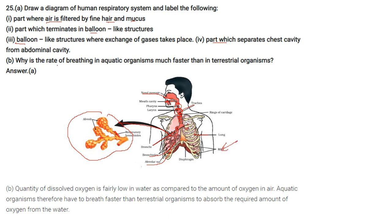Why is the rate of breathing in aquatic organisms much faster than in terrestrial organisms? The quantity of dissolved oxygen is fairly low in water compared to the amount of oxygen in outside air. Therefore, aquatic organisms have to breathe faster than terrestrial organisms to absorb the required amount of oxygen from the water.